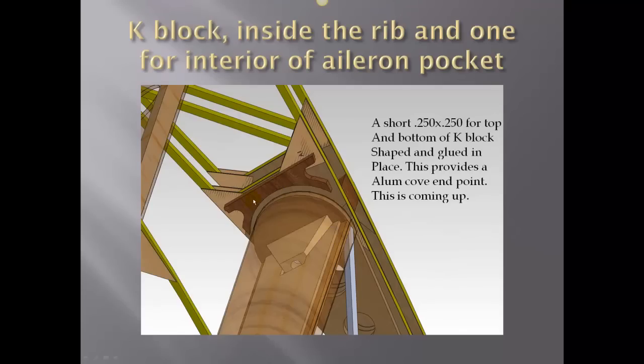This is showing the K block. This is the outer portion, or the outside wing tip portion of the wing. We'll need to put a little quarter by quarter right here and right here, this location and this location. Then we will use the same gusset as you've seen in video two or three and it showed how that covered this K block. This K block is used to hold the aluminum cove which you'll be seeing coming up shortly.